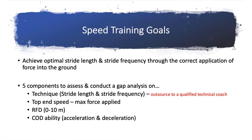There are two general speed training goals. The first is optimization of stride length and the optimization of stride frequency. With that, there are five components to assess and conduct a gap analysis on. The first and second are technically related: the assessment of stride length and stride frequency, which you may need to outsource to a technical coach.